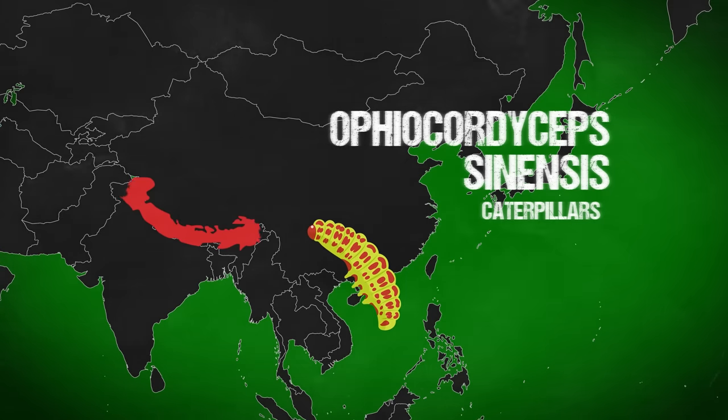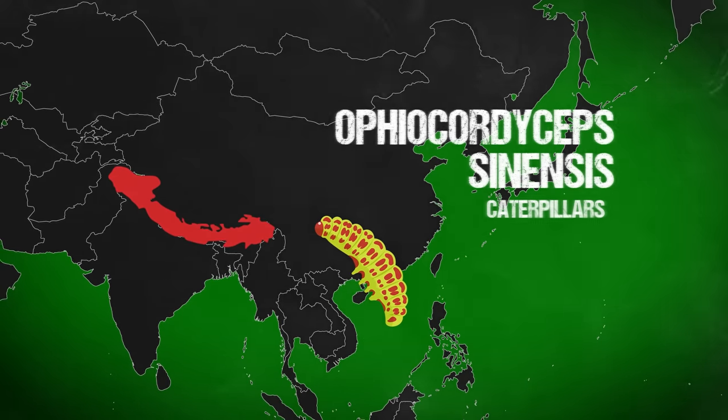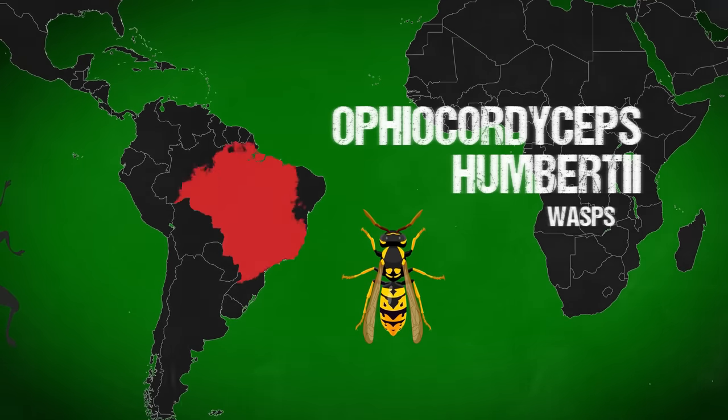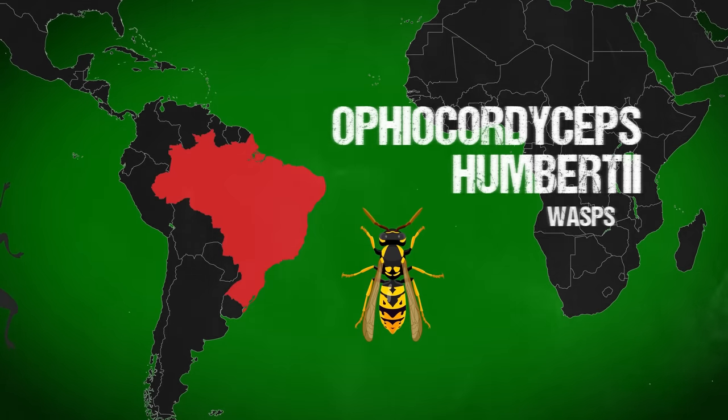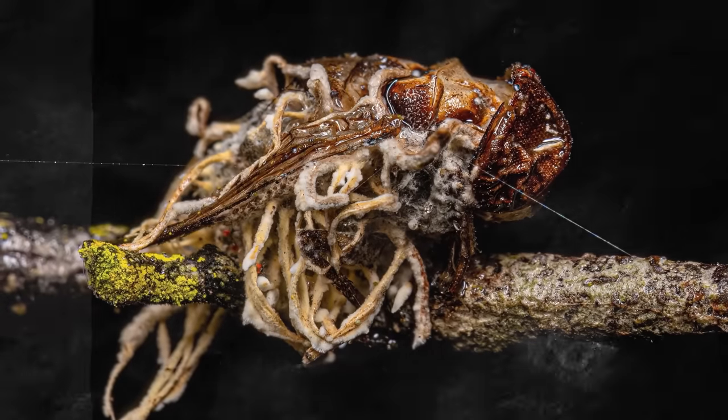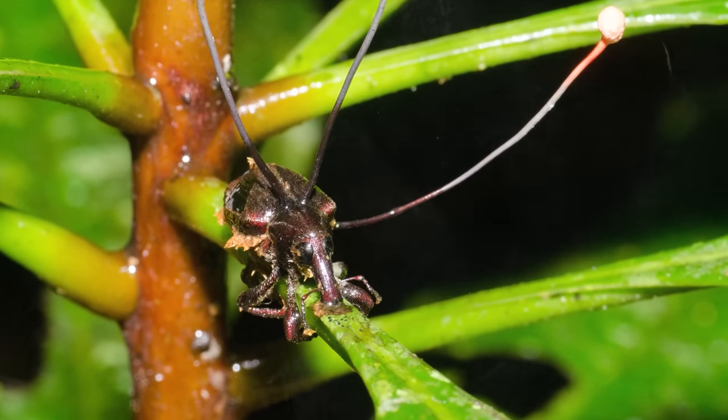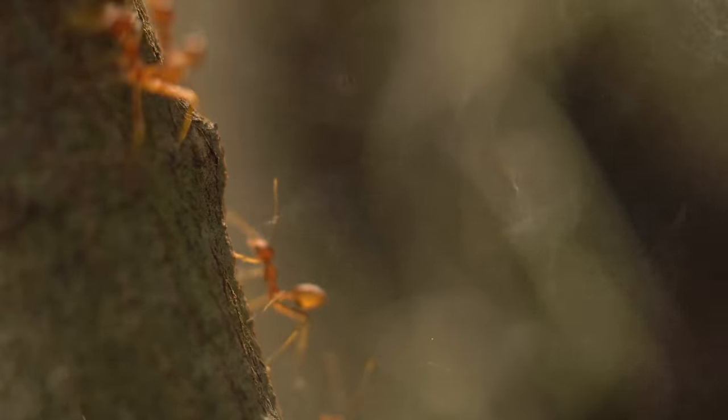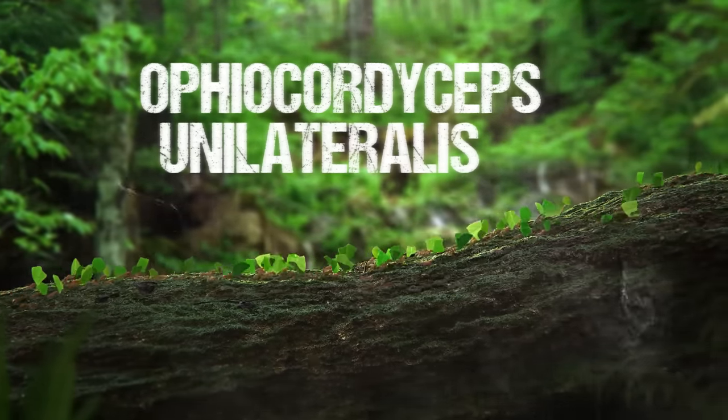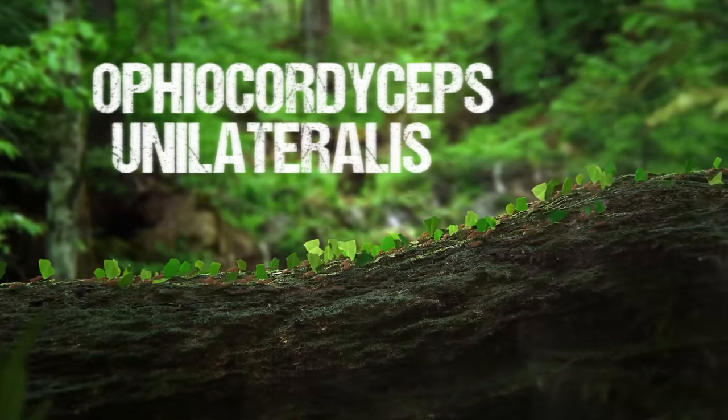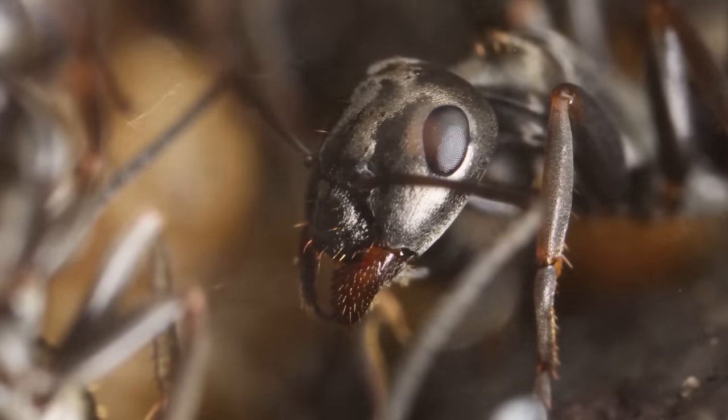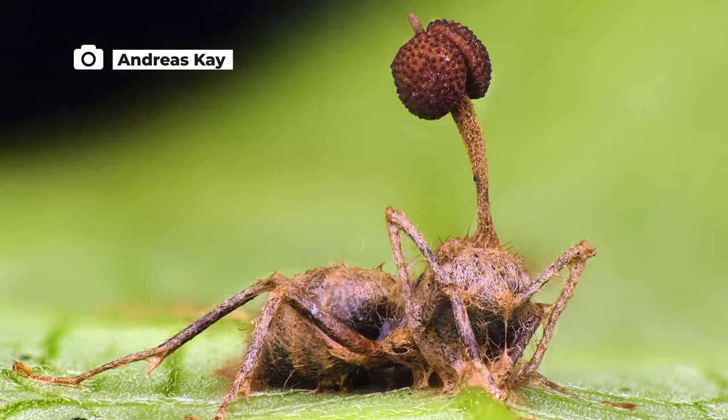Ophiocordyceps curculionum attacks weevils in Central and South America. Ophiocordyceps sinensis kills caterpillars up in the Himalayas. And Ophiocordyceps humberti infects wasps in Brazil, causing them to land on a leaf or branch and bite down into it before passing away.